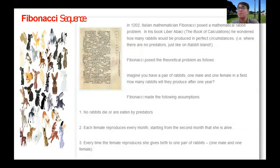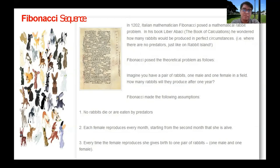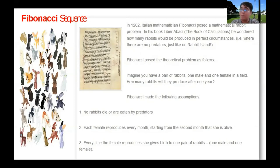In 1202, Italian mathematician Fibonacci posed a mathematical rabbit problem in his book of calculations. He wondered how many rabbits would be produced in perfect circumstances, such as on Rabbit Island where there are no predators. Fibonacci posed the theoretical problem: imagine you have a pair of rabbits, one male and one female, in a field. How many rabbits would they reproduce after one year?